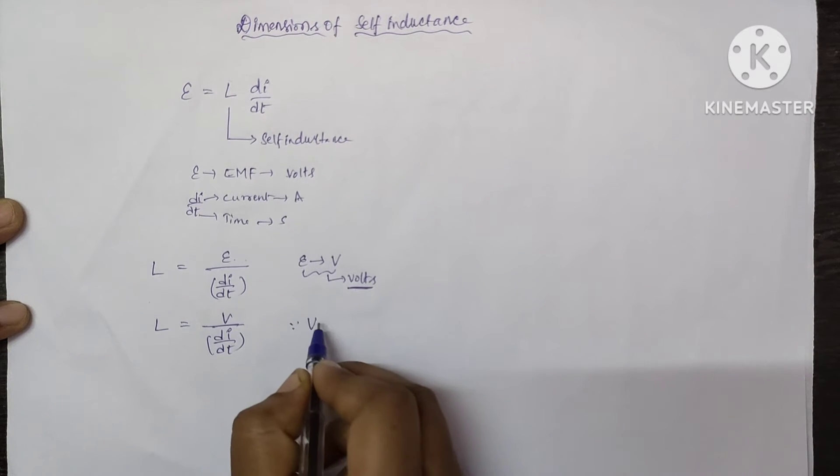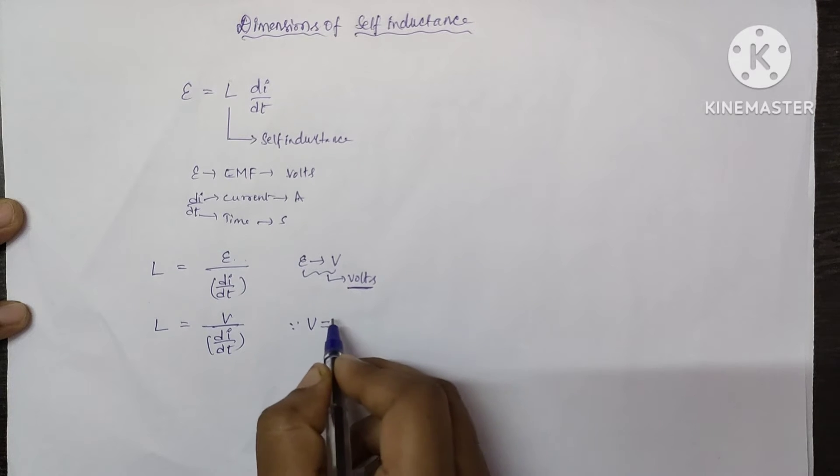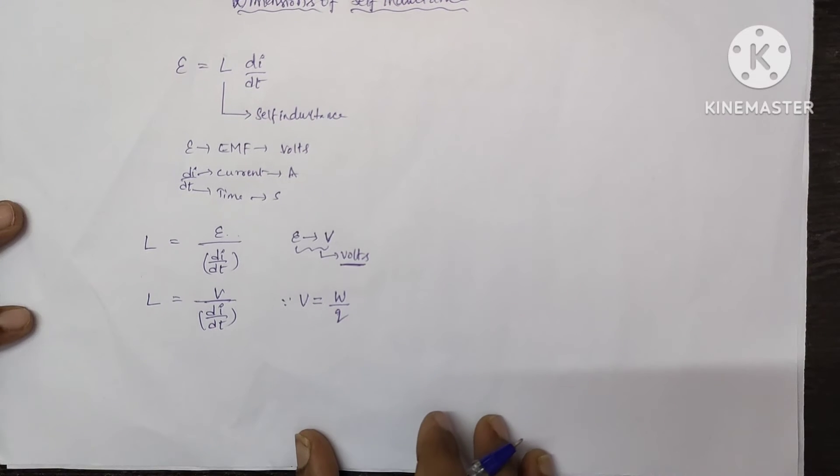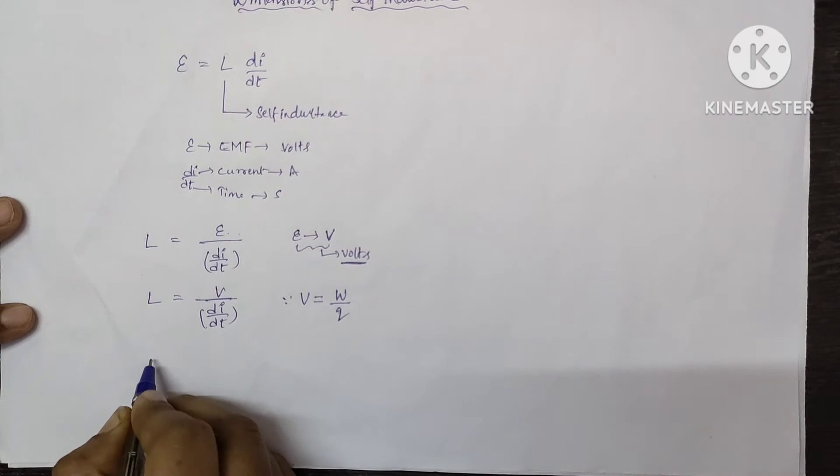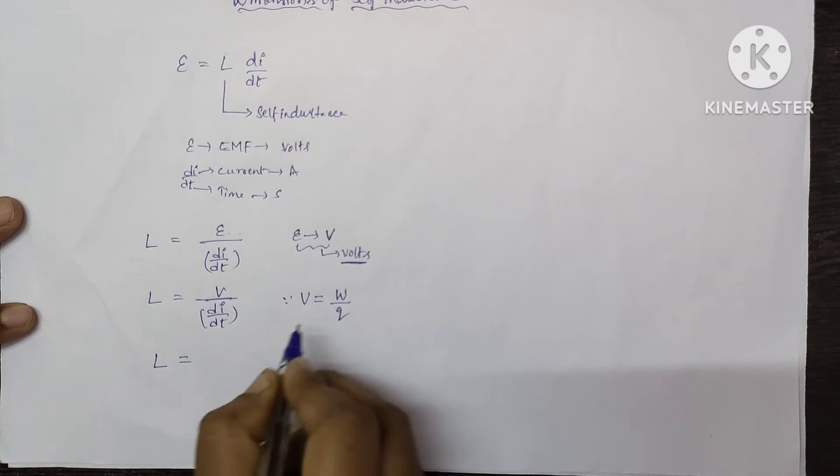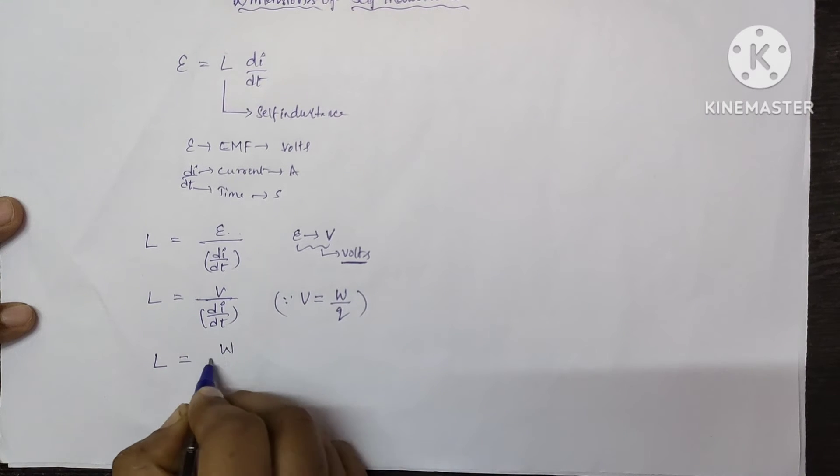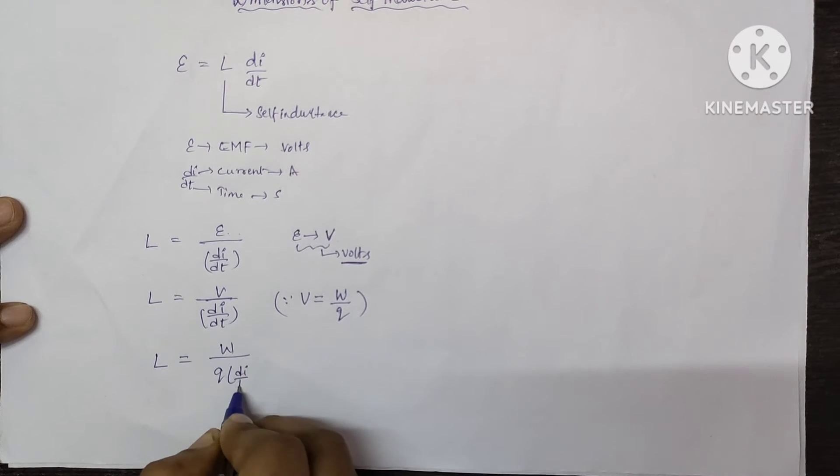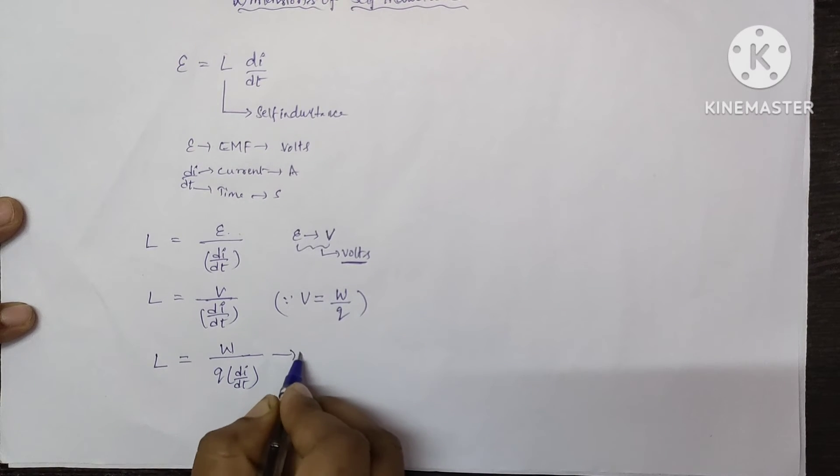Now we know the formula potential V is equal to W by Q. Now L equal to W by Q into di by dt. Let it be equation number 1.